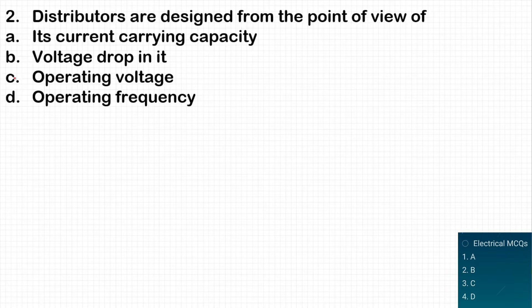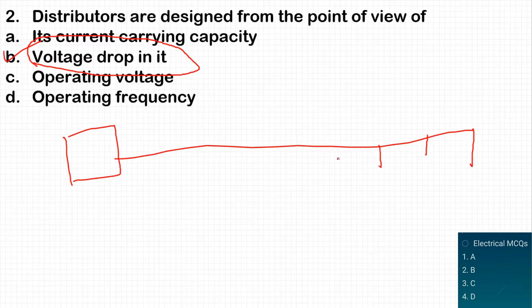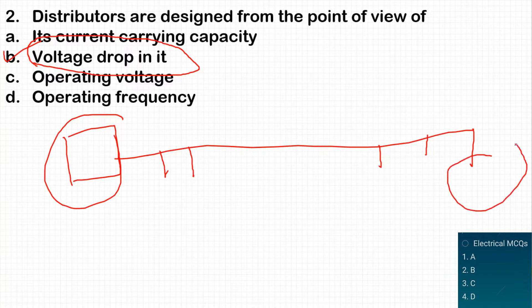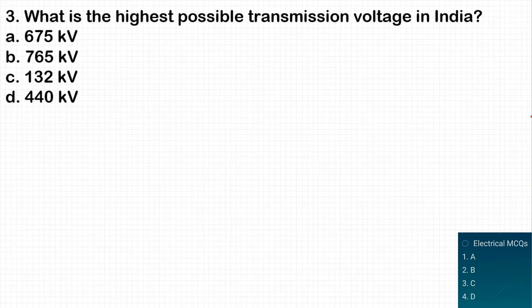The next question: distributors are designed from the point of view of which parameter? Unlike the feeder, distributors are designed from the point of view of voltage drop, because distributors supply current to consumers and all consumers must have the same voltage. We must consider the voltage drop in the distributor to assure all consumers have the same voltage at the point of supply.